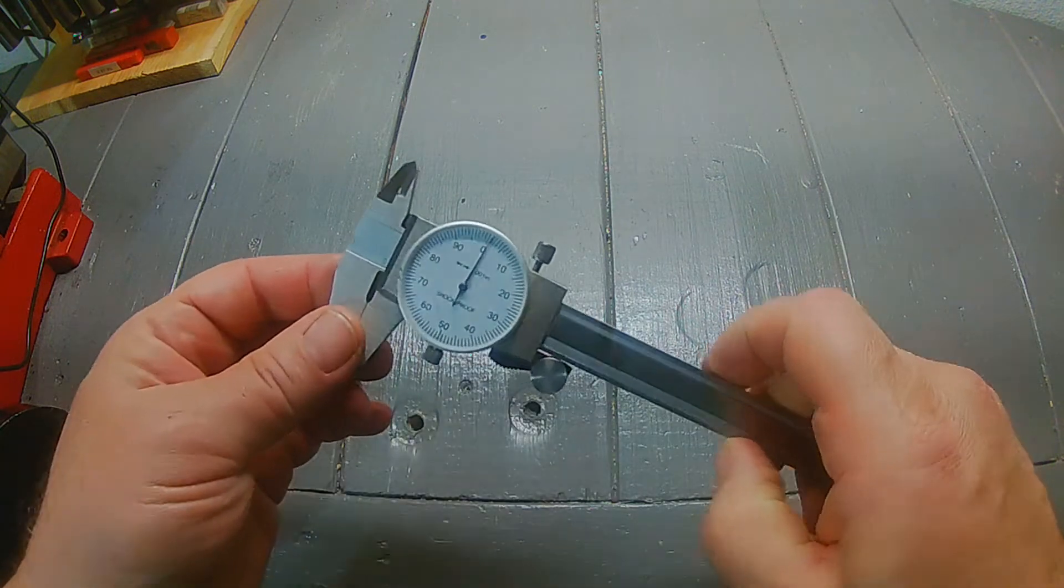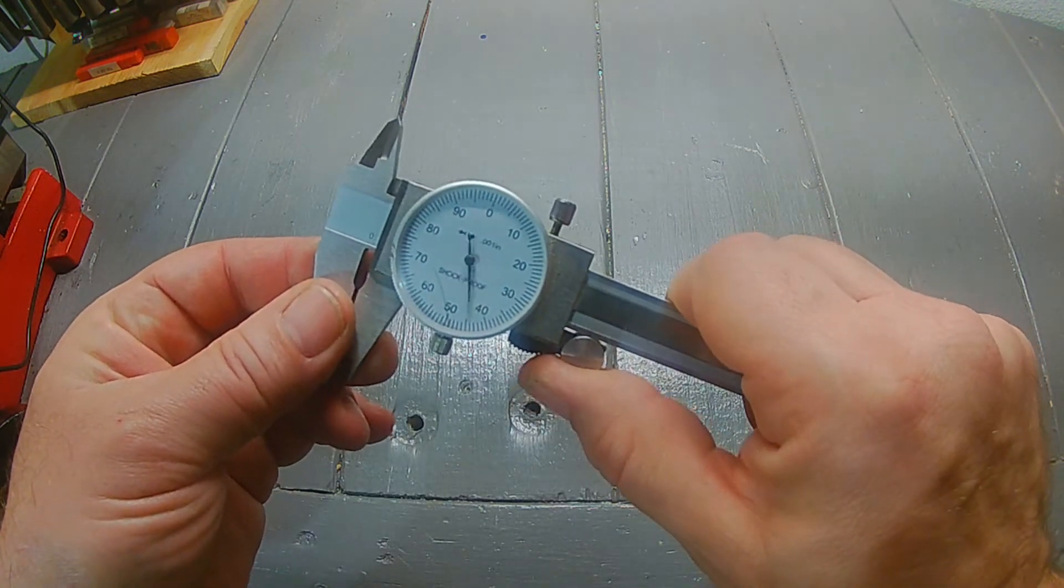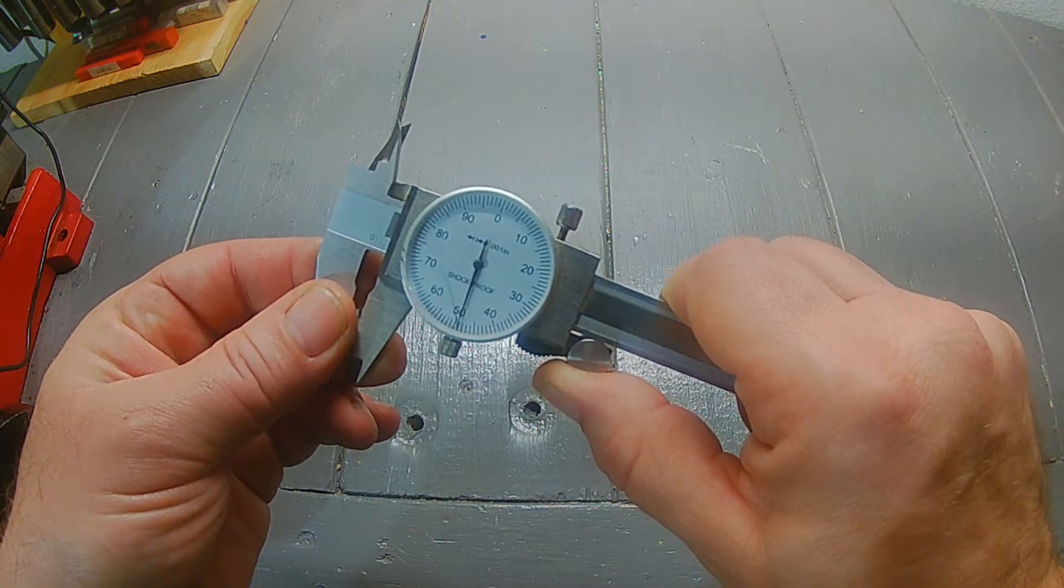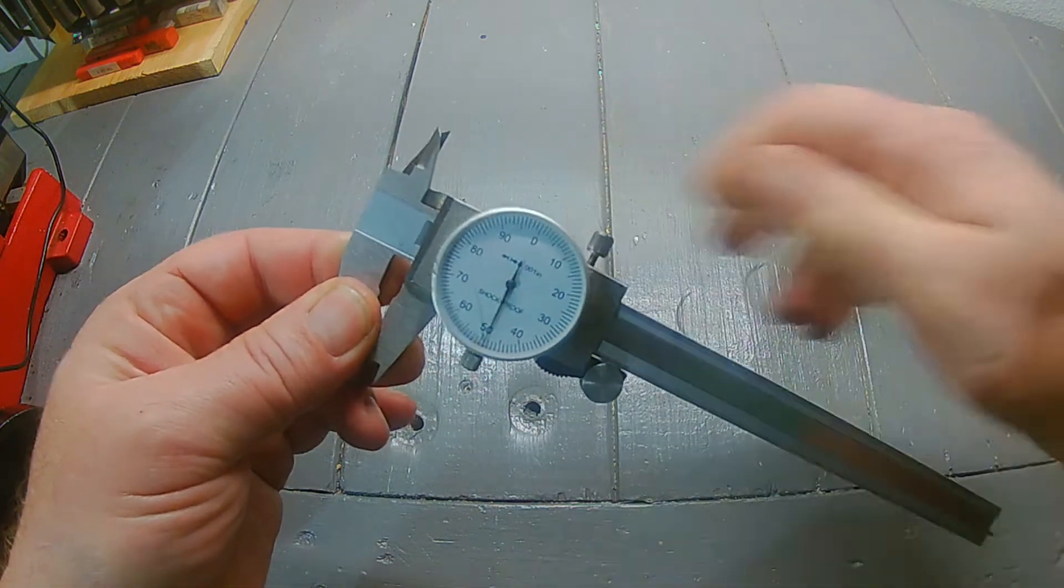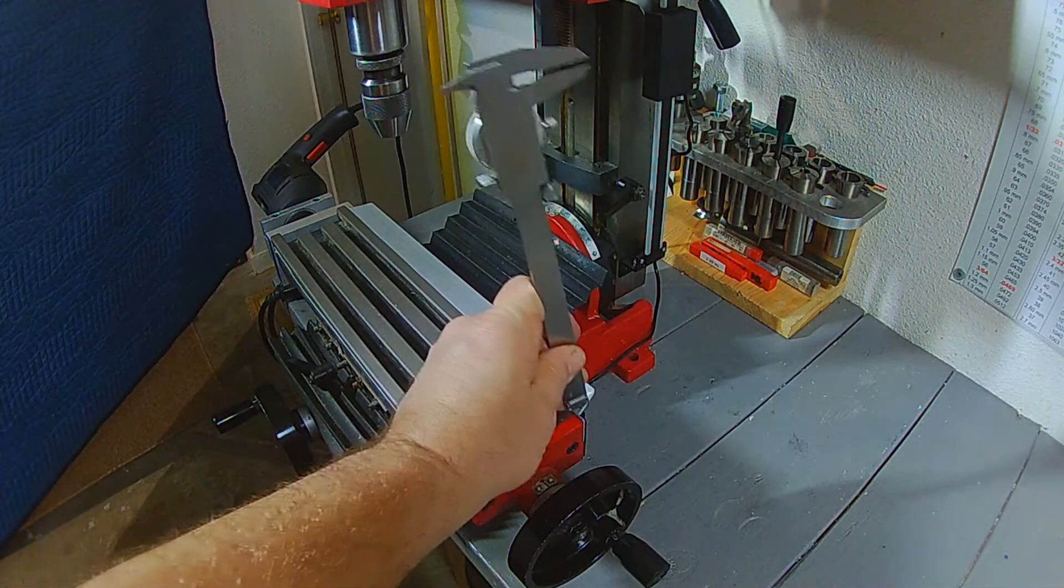Preset a caliper or depth gauge. The top of the X scale brackets should be 150 thousandths down from the top surface of the bed.